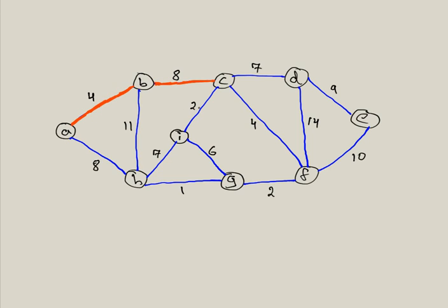So looking through this, we have 7, 4, 2, 11, and 8. We're going to choose 2 because that's the least costly edge. So we're going to highlight this path right here.